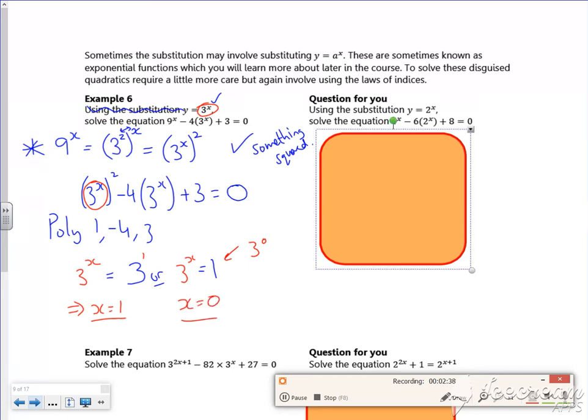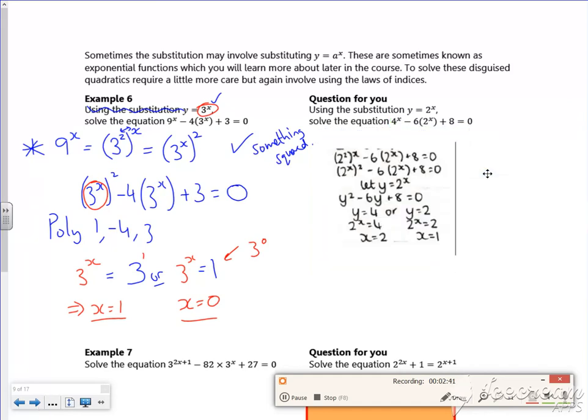Let's have a look at this one here. And I'll now do it my way as well. So the 4 to the x is 2 to the power x. Switch the powers over, 2 to the x all squared. So I've got the something squared minus 6 lots of the something plus 8 is 0.